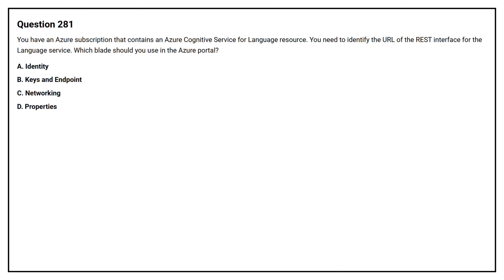Option number 281. You have an Azure subscription that contains an Azure Cognitive Service for Language resource. You need to identify the URL of the REST interface for the language service. Which blade should you use in the Azure portal? Option A: Identity. Option B: Keys and Endpoint. Option C: Networking. Option D: Properties. The correct answer is Option B: Keys and Endpoint.